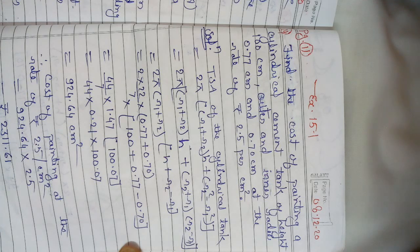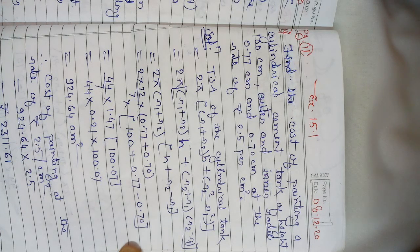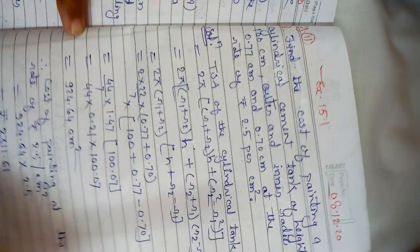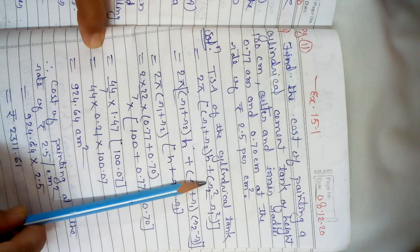Total surface area of the cylindrical tank can be given by 2π[(R1 + R2)H + (R2² - R1²)].